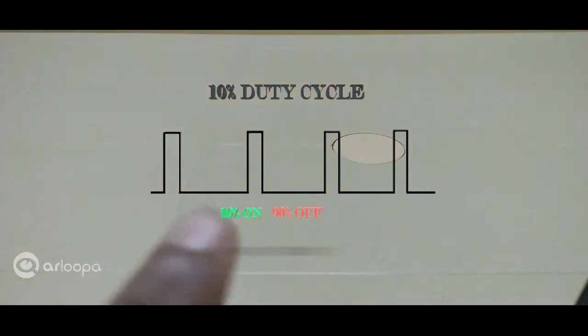That's the time from this point to this point. In this case, the duty cycle is 10%, meaning that the signal is in the active state for 10% of the time period and in the inactive state for 90% of the time. This is how a signal with 10% duty cycle would sound like.